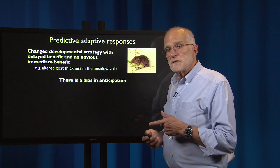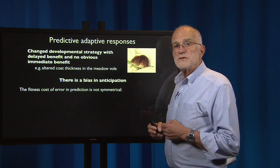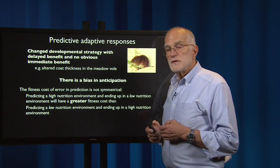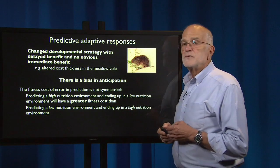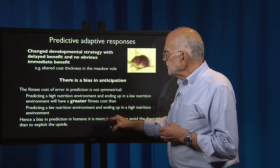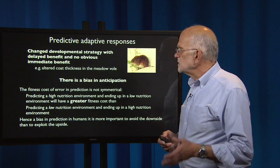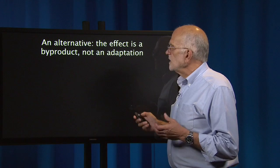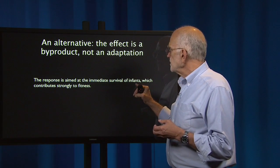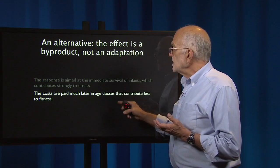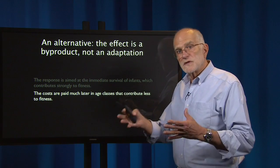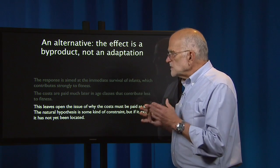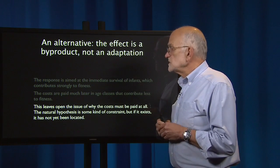There is a bias in anticipation: the fitness cost of an error in prediction is not symmetrical. Predicting a high-nutrition environment and ending up in a low-nutrition environment will have a greater fitness cost than predicting a low-nutrition environment and ending up in a high-nutrition one. So there's a bias in prediction in humans — it's more important to avoid the downside than to exploit the upside. An alternative hypothesis is that the effect is a byproduct, not an adaptation, and that the response is aimed at the immediate survival of infants. The costs are paid much later in age classes that contribute less to fitness — this connects to the evolutionary theory of aging — leaving open the issue of why the cost must be paid at all.